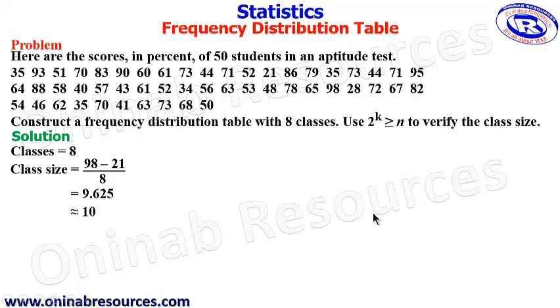Then the next thing is in the construction of the frequency table, where we have the scores, we are going to have our class intervals here. Then we also start from 21. Then 21 to 30 gives us 10 as class size. So we have 21 to 30.